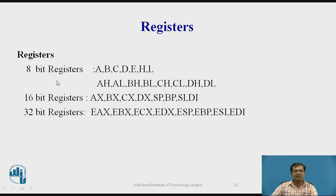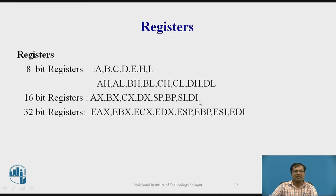Regarding registers: the 8085 has 8-bit registers: A, B, C, D, E, H, L. The 8086 also has 8-bit registers: AH, AL, BH, BL, CH, CL, DH, DL. By combining AH and AL, a 16-bit register AX is formed in the 8086. Similarly, the 16-bit registers are BX, CX, DX, SP, BP, SI, and DI.